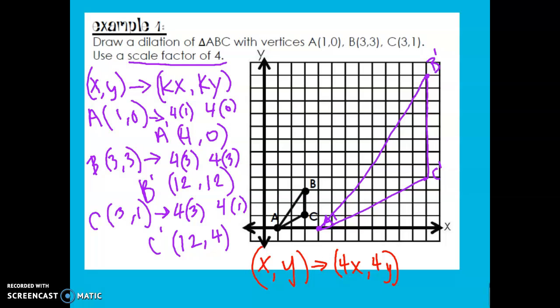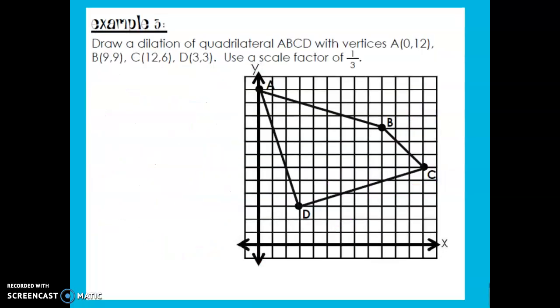Moving to the next example. Draw a dilation of quadrilateral ABCD with vertices A(0, 12), B(9, 9), C(12, 6), and D(3, 3). Use a scale factor of 1 third. So I first am going to notice that this is a fraction between 0 and 1, and therefore I am going to have a reduction. It is going to be smaller than the original.